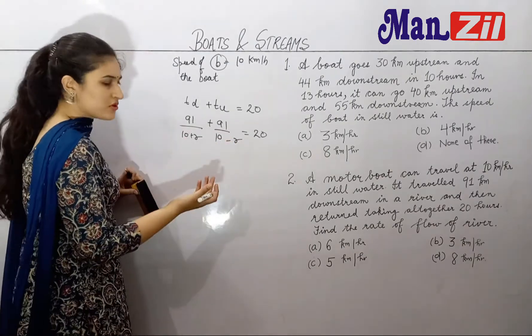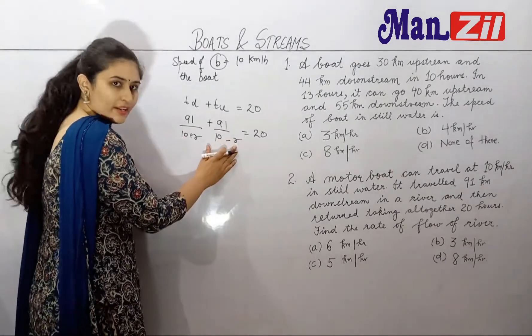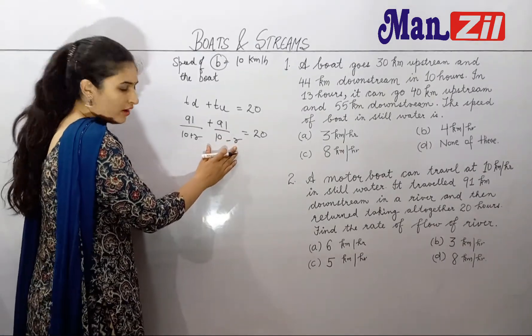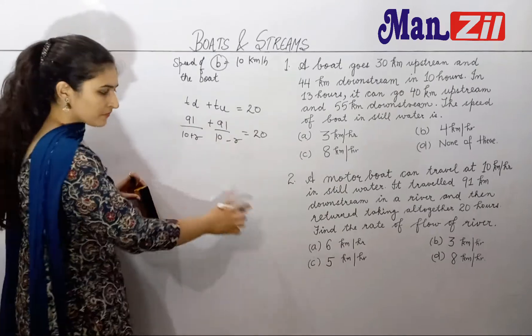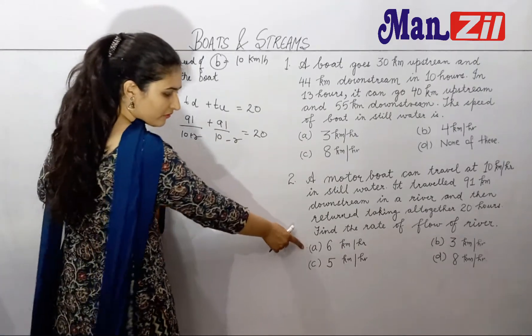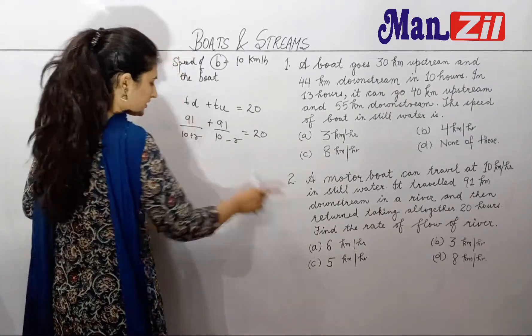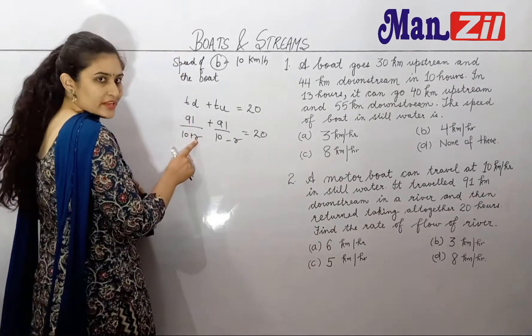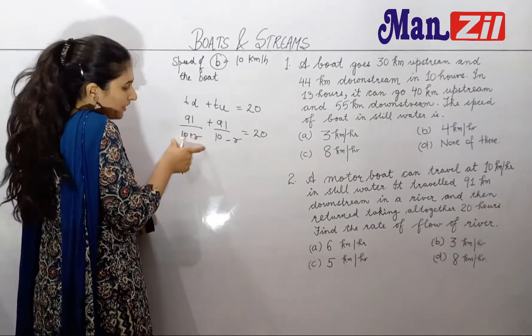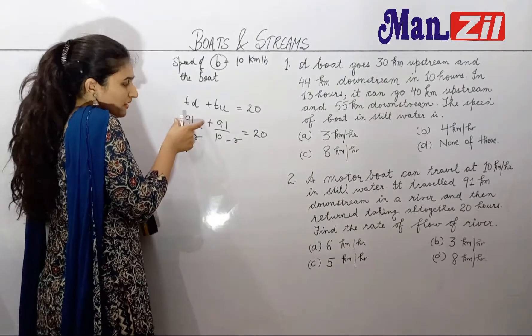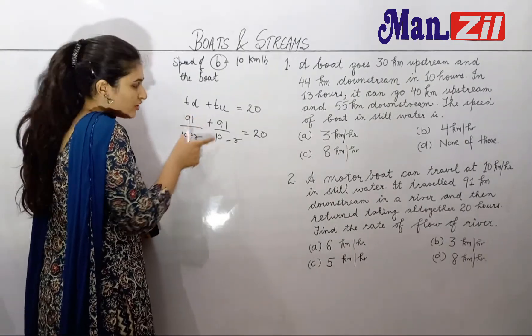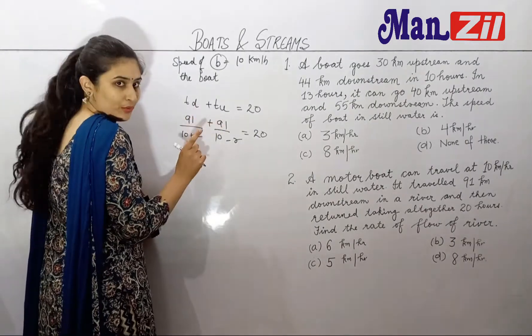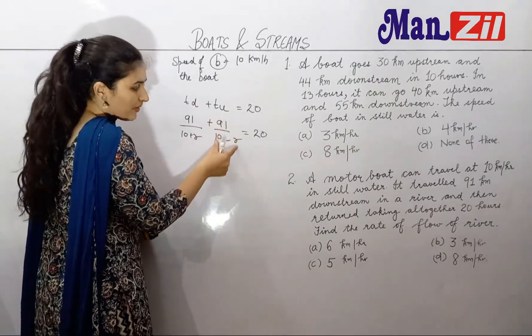Now we will put the options here for R. We have written R for the river speed. The first option is 6. If I put 6 here, the numbers should divide 91 cleanly without fractions for the answer to be 20.